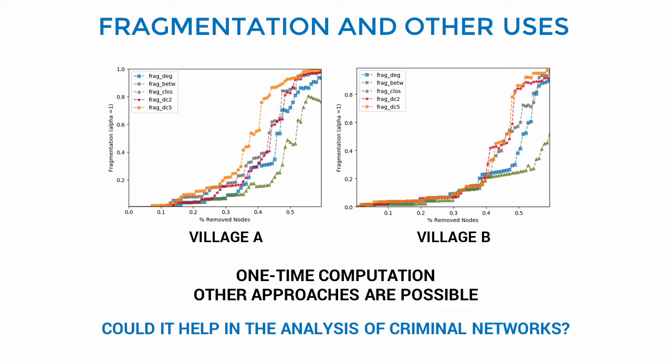Thinking of possible uses, we plan to test distinctiveness in criminal networks. We still don't know, but it could be the case that our metrics are useful to identify some kind of criminals. Sometimes the most important nodes in criminal networks are not too central, but they have middle positions between the network core and the periphery.